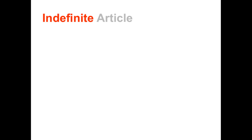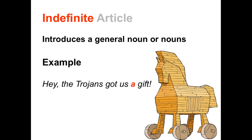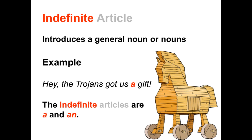Indefinite article. Indefinite articles introduce a general noun or nouns. The indefinite articles are 'a' and 'an.' Here is an example of a sentence using an indefinite article: 'Hey, the Trojans got us a gift.' The speaker uses the indefinite article 'a' because he is referring to a general gift.